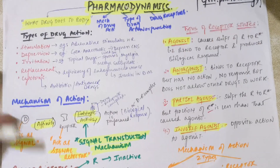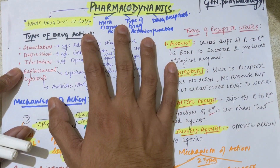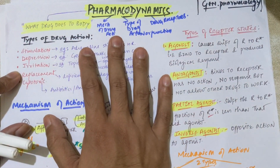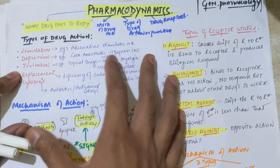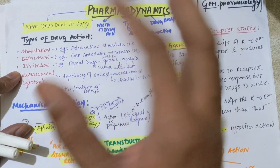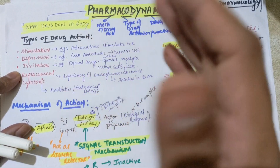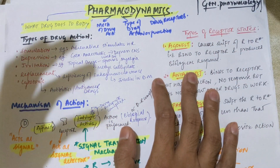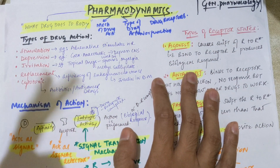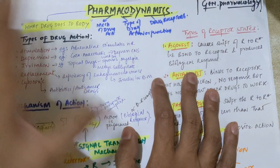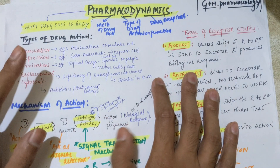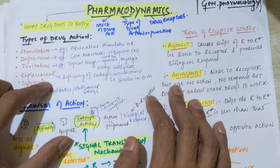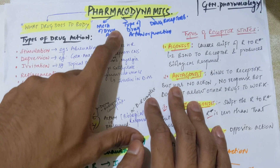Hello everyone, this is Suesh here. Now we are in the section of general pharmacology in which we have discussed the pharmacokinetics videos. I have made videos on all the ADME — that is absorption, distribution, metabolism, and excretion of the drug. We have done with the pharmacokinetics concept, all ADME processes, and now in this video we are starting with pharmacodynamics.